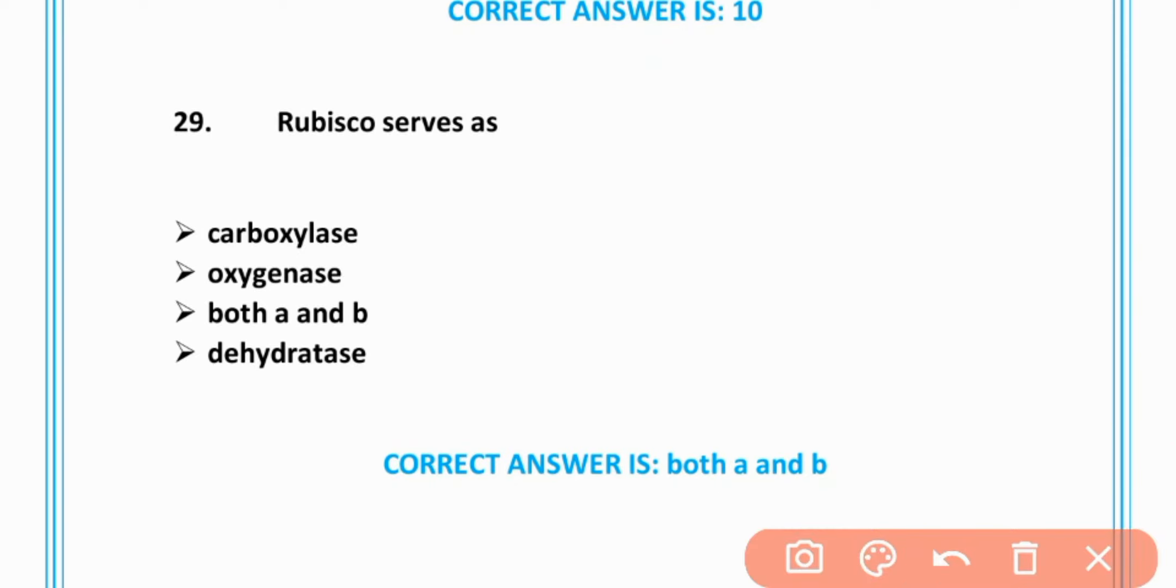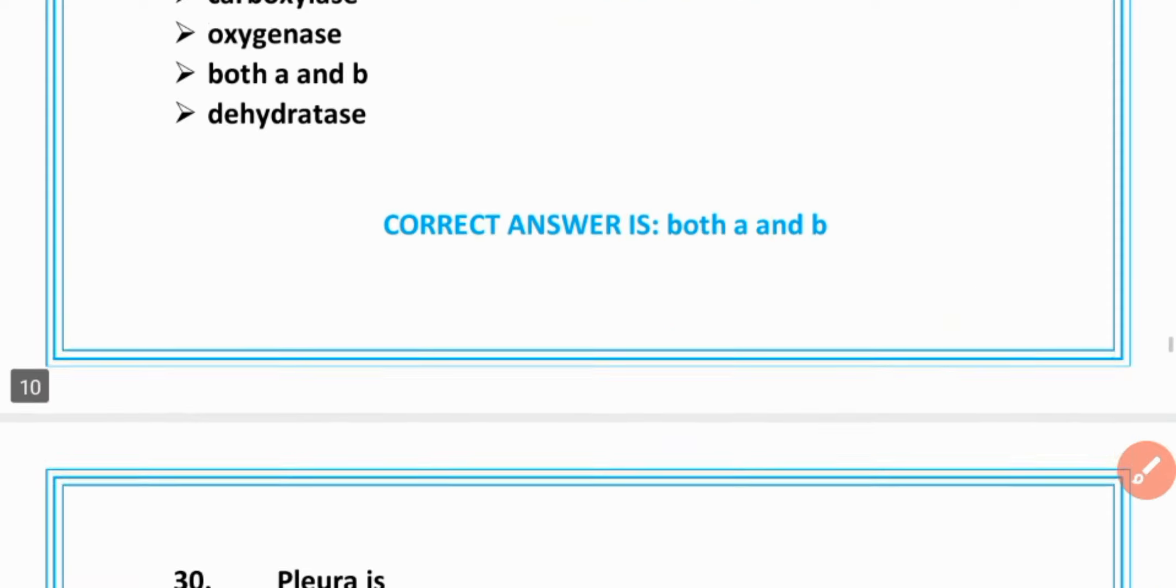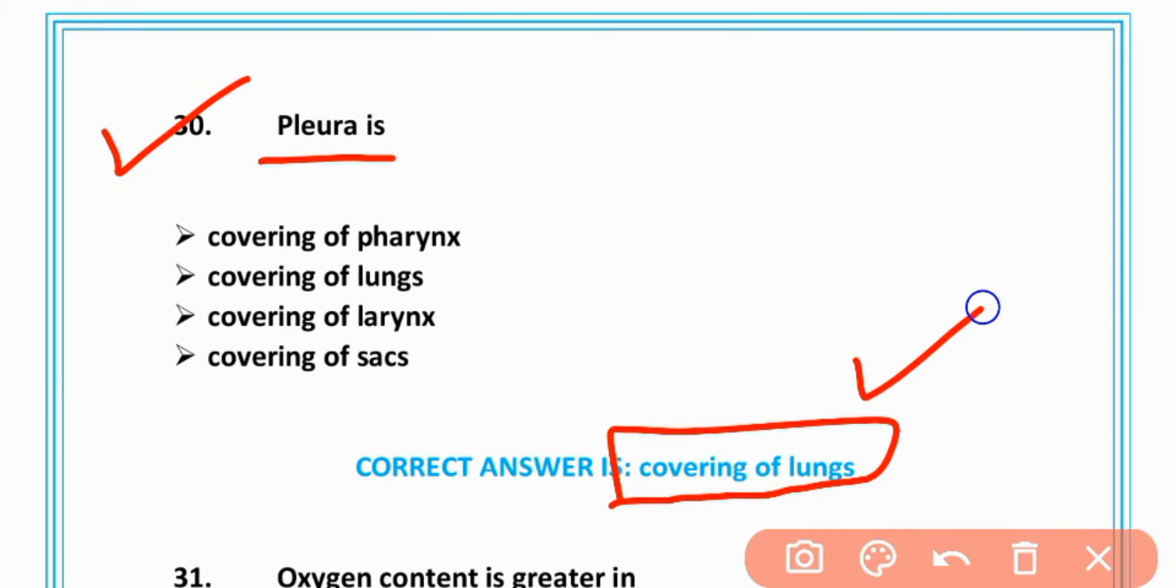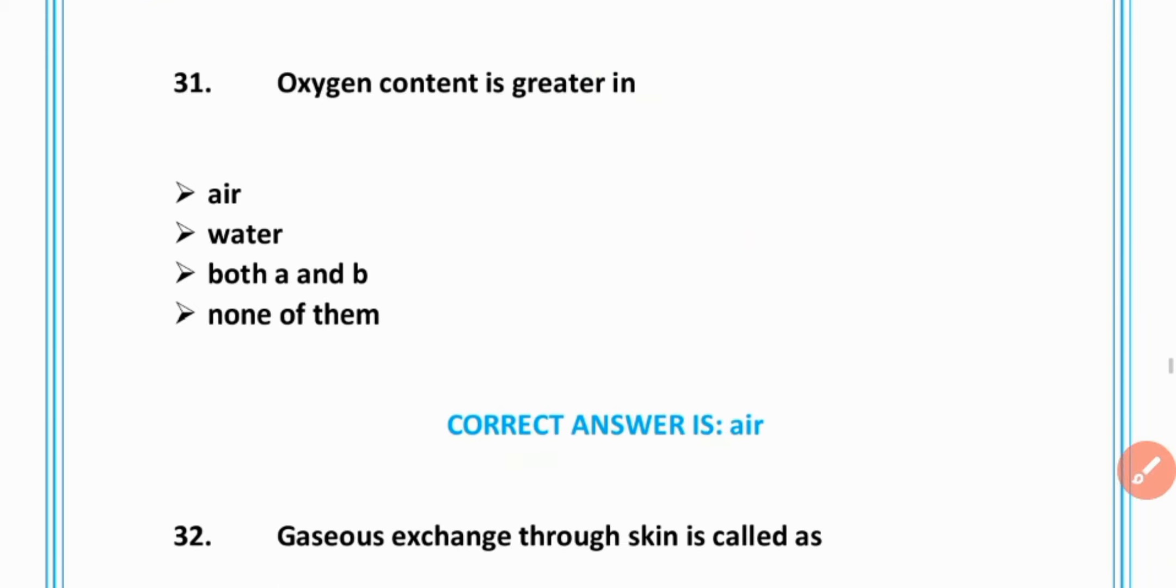MCQ number 29: Rubisco serves as carboxylase as well as oxygenase. MCQ number 30: Pleura is covering of lungs. MCQ number 31: Oxygen content is greater in air, option A is correct.